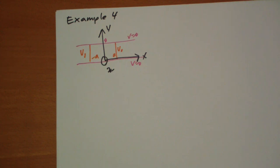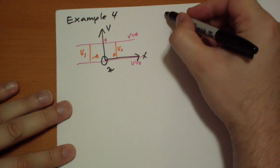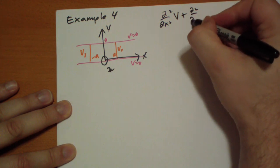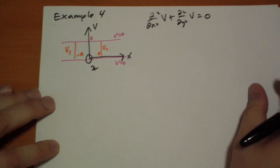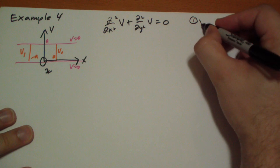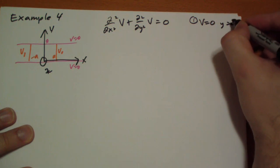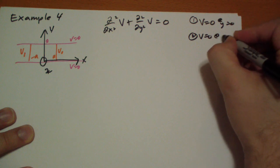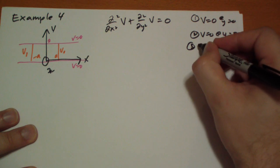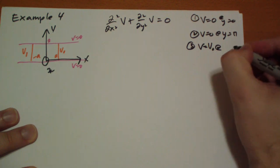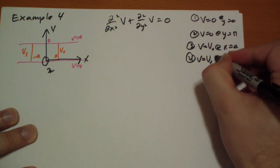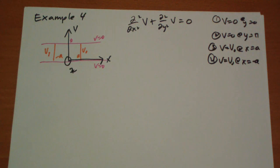And so once again, we don't have to look at the z-term. Symmetry allows us to drop that. So we don't have to look at the z-term at all. And the boundary conditions are one, v equals zero when y equals zero. Two, v equals zero at y equals pi. Three, v equals v-naught at x equals a. And finally four, v equals v-naught at x equals negative a. Okay? Fairly straightforward.